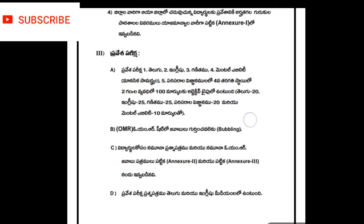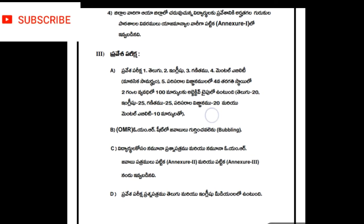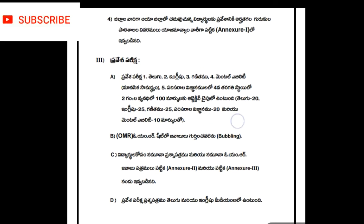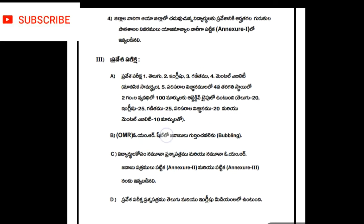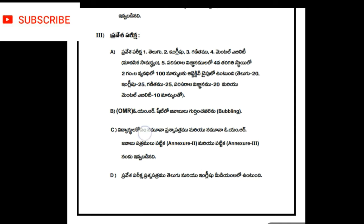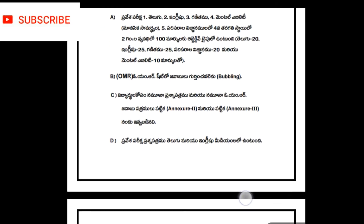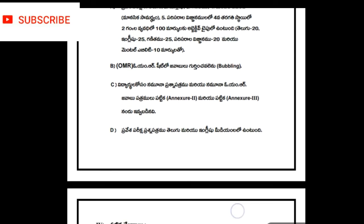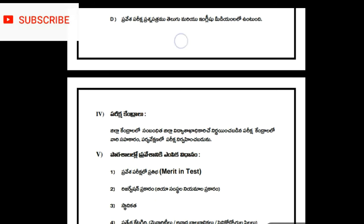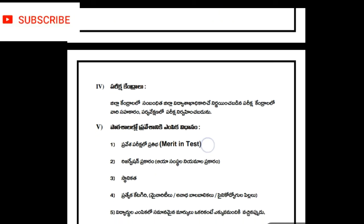The objective type has options A, B, C, D. This covers intelligence, environmental, and mental ability. There is a bubbling answer sheet. You will be able to do the exam in Telugu, English, and other mediums.